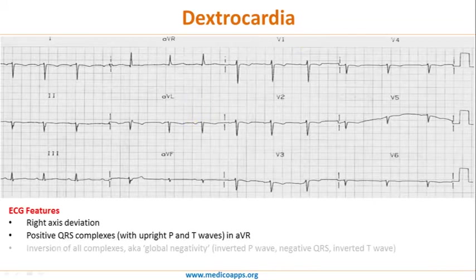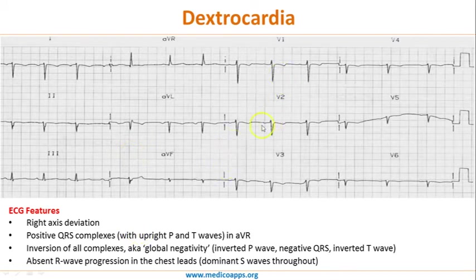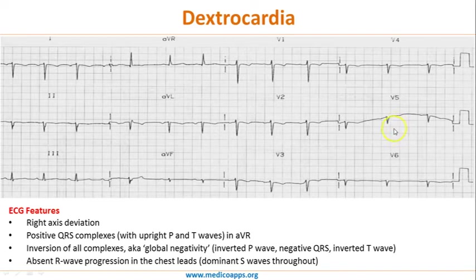As already explained, the first finding is right axis deviation, which occurs because the heart is placed towards the right. Then AVR will show a positive QRS complex. There is also inversion of all the complexes — that is, a global negativity — so you will have inverted P waves and QRS complex also inverted. Like an absent R wave progression in the chest leads: normally the R wave is smaller in V1 and as you move from V1 to V6 the R wave becomes predominantly positive and larger than the S wave. But here the R wave is always small and the negative S wave is always bigger. So these are the features of dextrocardia.